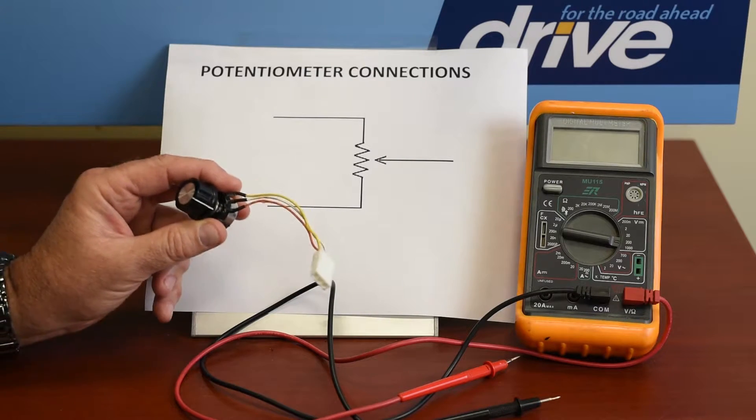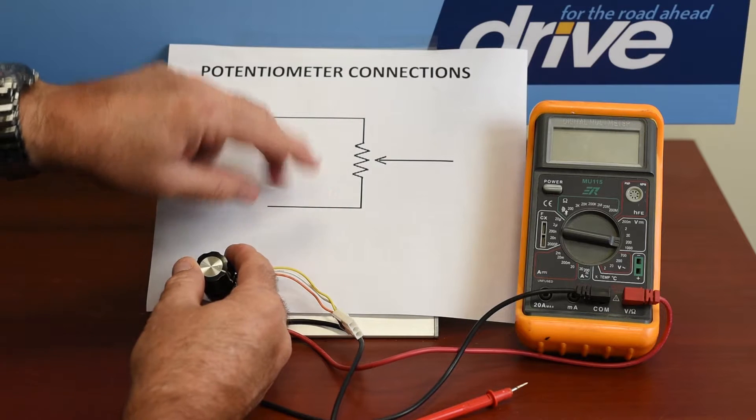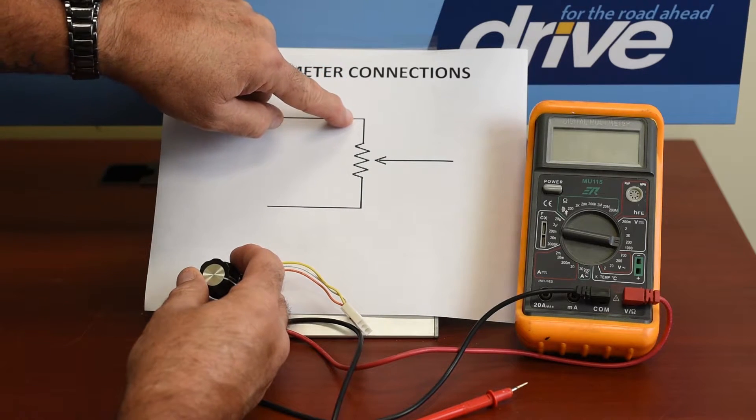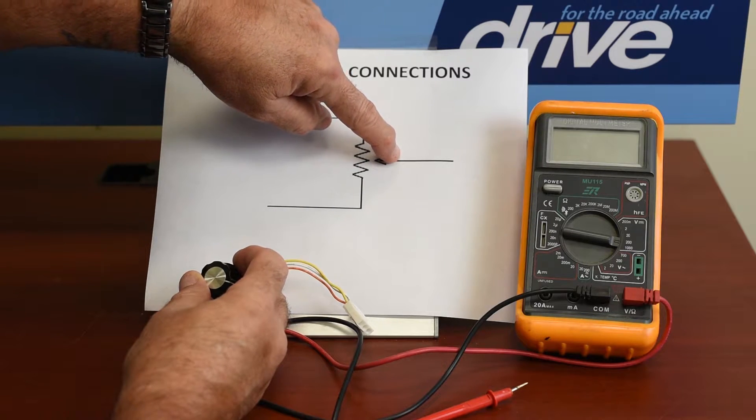A potentiometer is a variable resistor. As you can see by the schematic symbol here, you have an end terminal, another end terminal, and you have a center terminal, also known as the wiper.